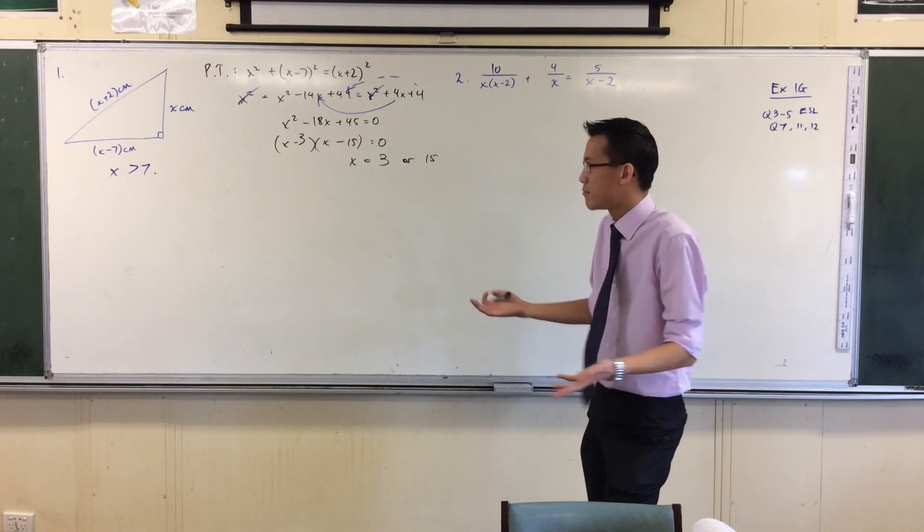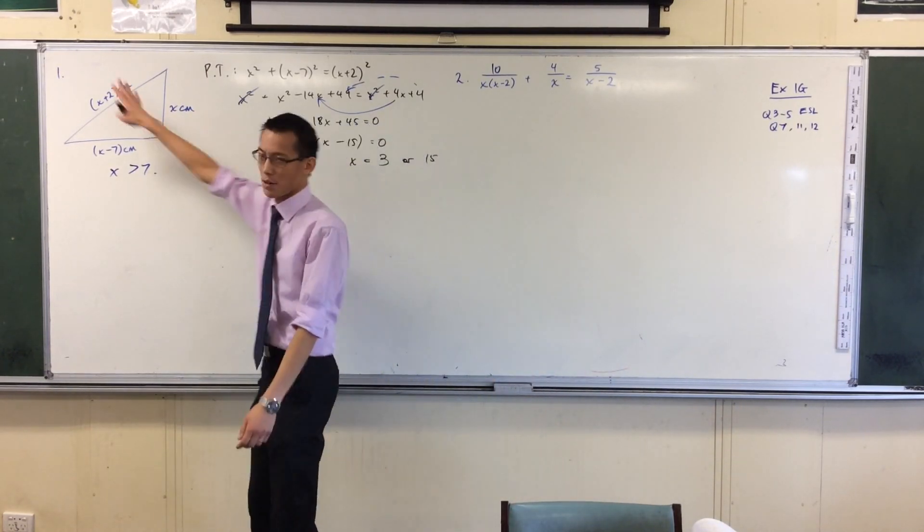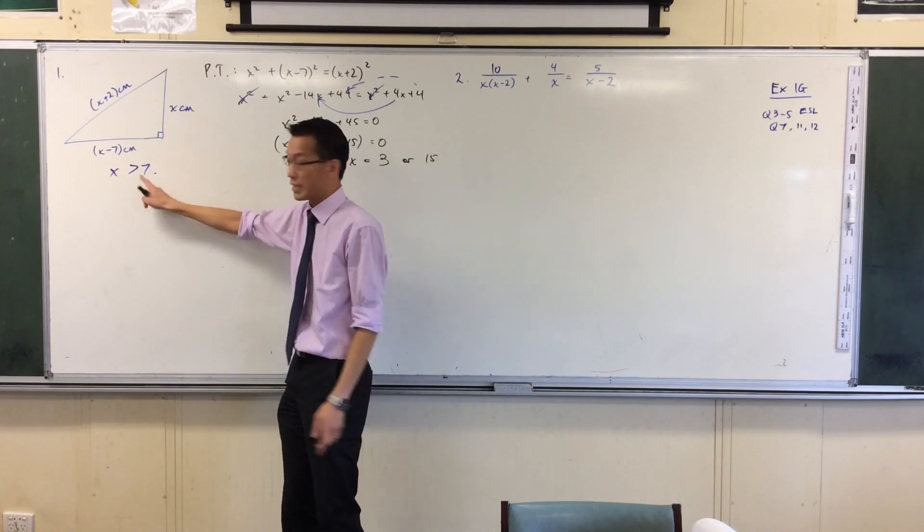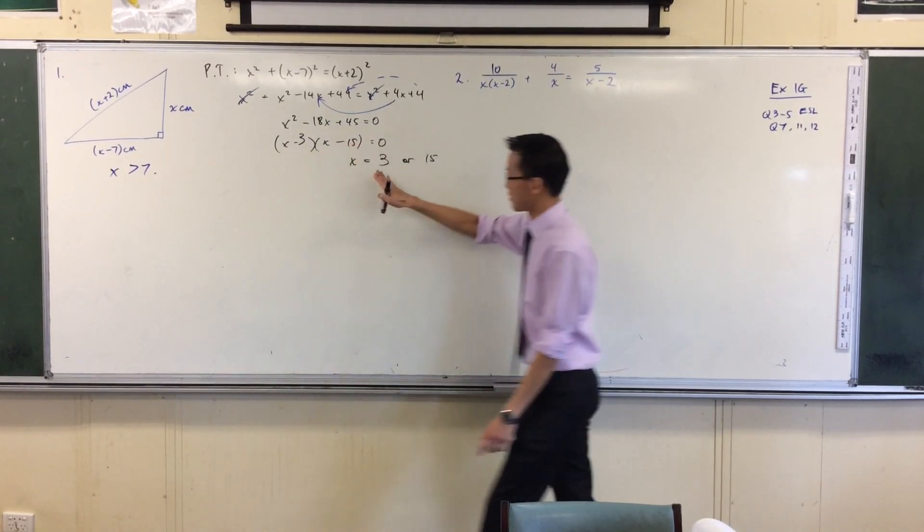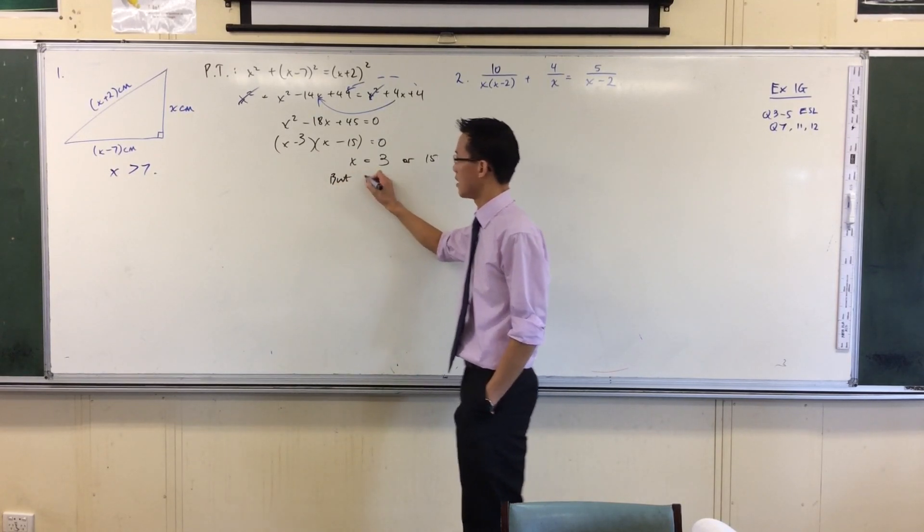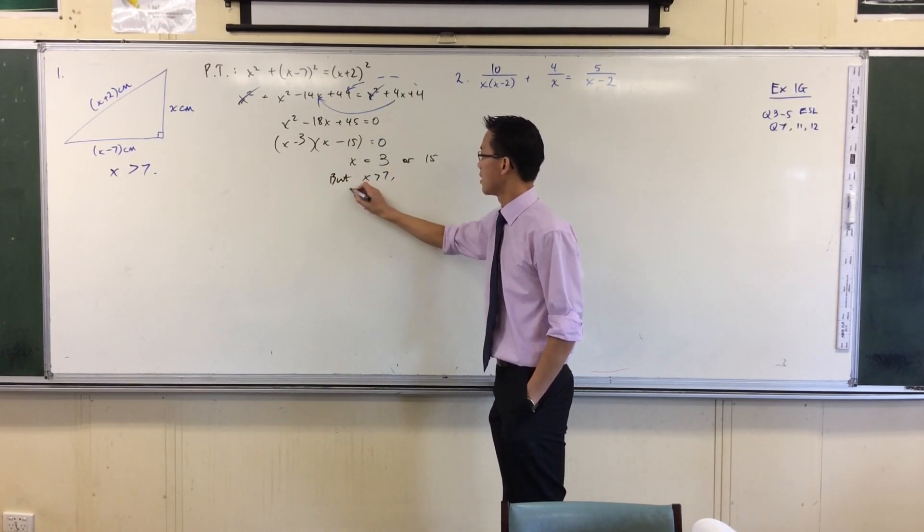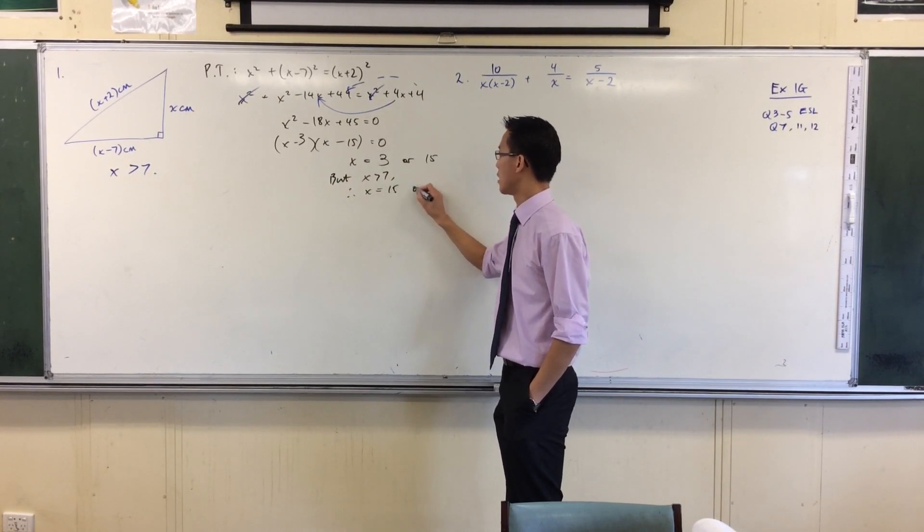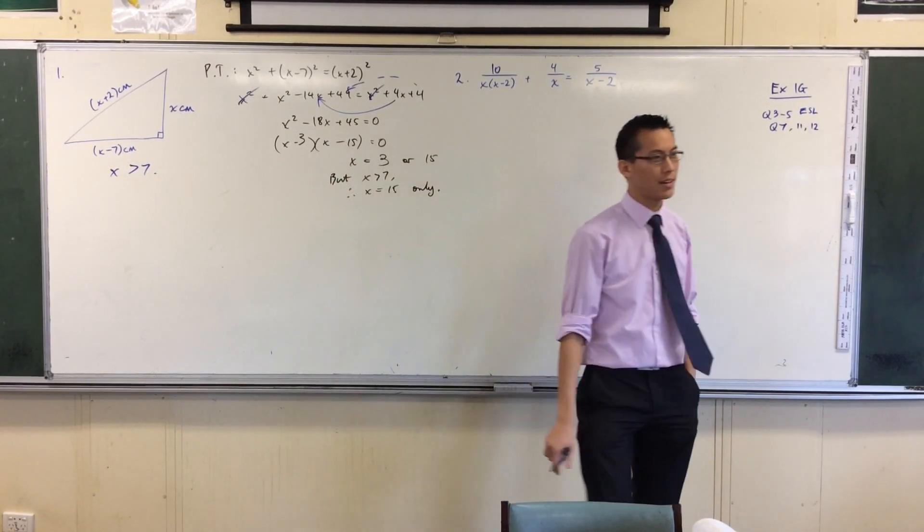Obviously you want these to be positive, but that's kind of a given. This is really your sneaky one, because it looks okay but it's not really okay. So at this point I would invoke the restriction that I noted earlier. I'd say this, therefore X is 15 only.